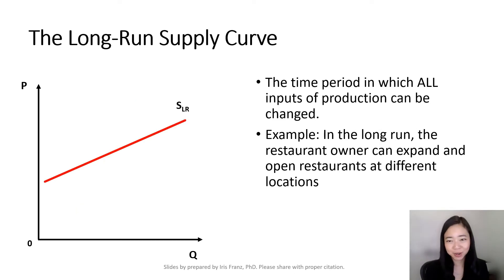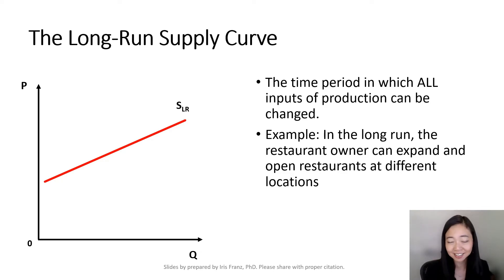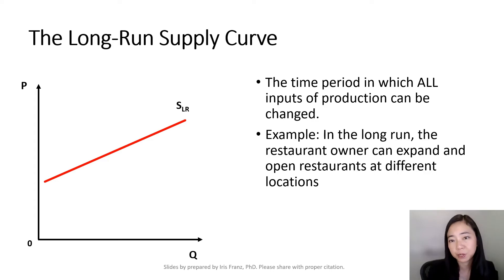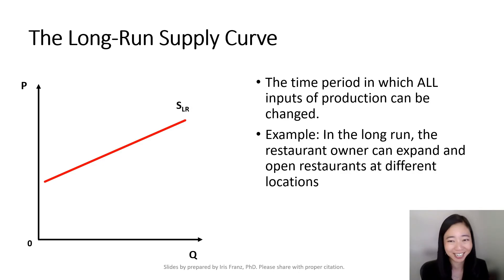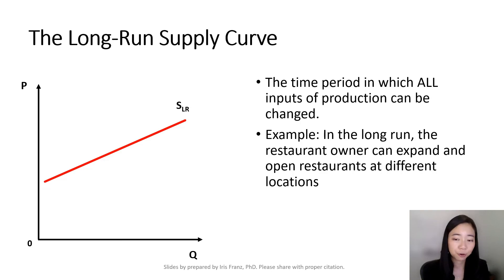Here is our long run supply curve. You can see that the supply curve is a lot more elastic than the supply curves we saw before. The long run is a period of time in which all production inputs can be changed. For example, in the long run, if you're doing great business in restaurants, not only can you expand your kitchen, but you can open restaurants in different locations. So we can see that in the long run, because all inputs can be changed, our supply curve is the most elastic.